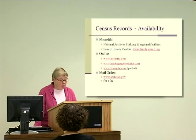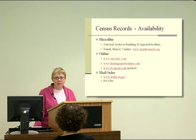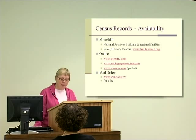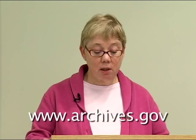These records are available on microfilm at the National Archives building in Washington, D.C. and some regional facilities — check with each facility to see what they have. They're also online at Ancestry.com, Footnote (a partial list), and HeritageQuest, which are available free of charge at National Archives facilities, though they are subscription-based online services. You can also order by mail for a fee, and get information at www.archives.gov.